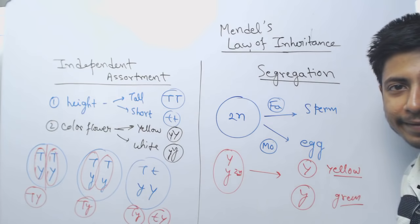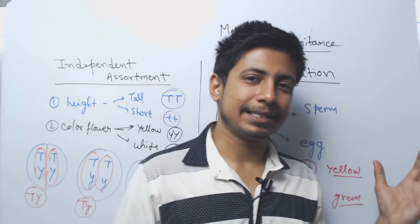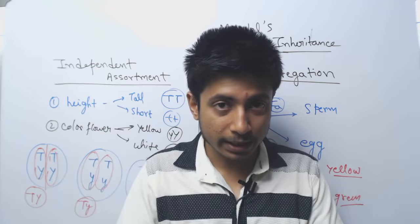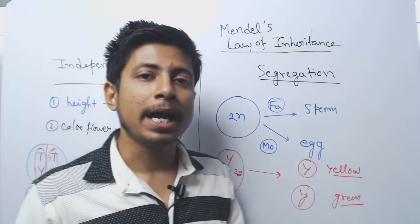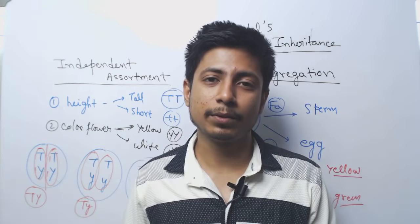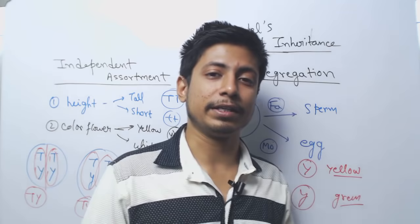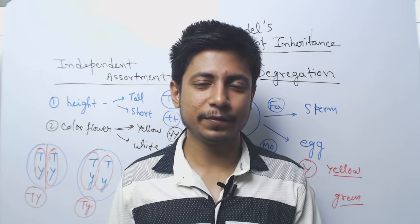That is independent assortment according to Gregor Mendel. During the formation of gametes, traits will definitely be separated — two traits will not stay together. And in independent assortment, if there are more than two characteristics, one character will not influence the other. This is the law of segregation and independent assortment. I hope this helped you understand the concept. If you like this video, please hit the like button, subscribe to my channel, and share this video with your friends. Thank you.